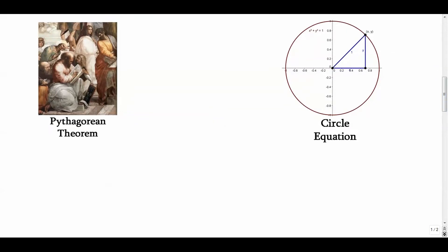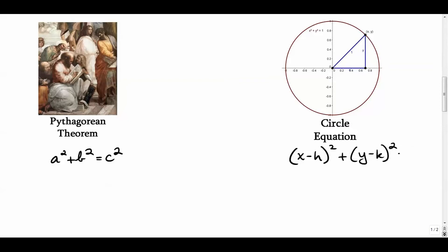While the two methods are basically the same, they do look a bit different. The Pythagorean theorem starts as a² + b² = c². Our circle equation is x minus h, quantity squared, plus y minus k, quantity squared, equals r², where (h, k) is the center and r is the radius. You can already see it's the same form as a² + b² = c². We'll start with the Pythagorean theorem side.